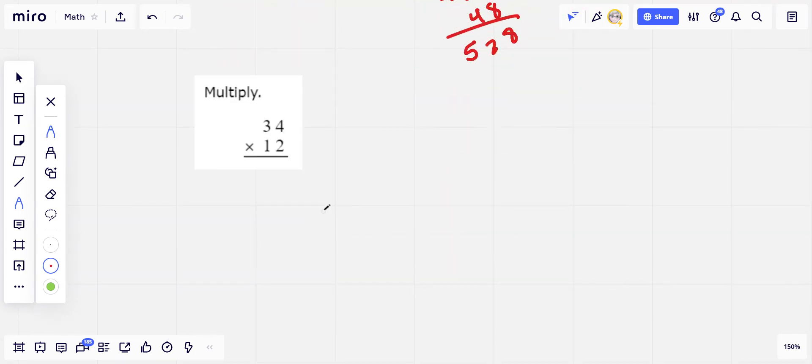Let's practice one more. So we've got 34 times 12 here. I'm going to do this the traditional way. So first, 2 times 4, that's 8. And then 2 times 3, that's 6. So put the 6 there.